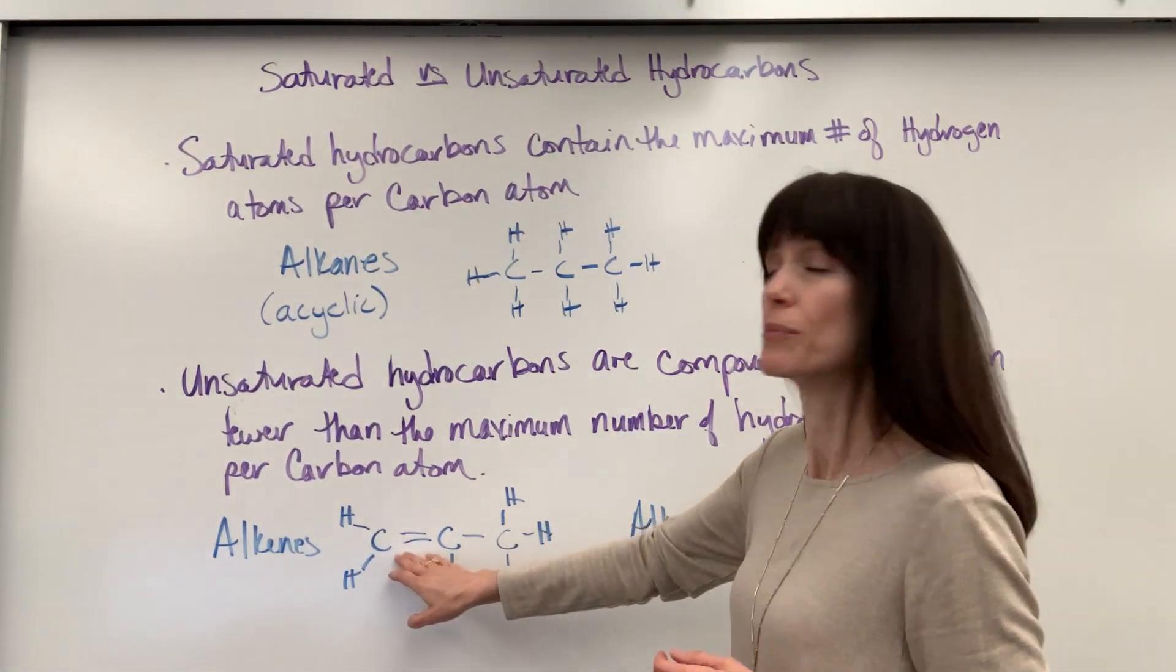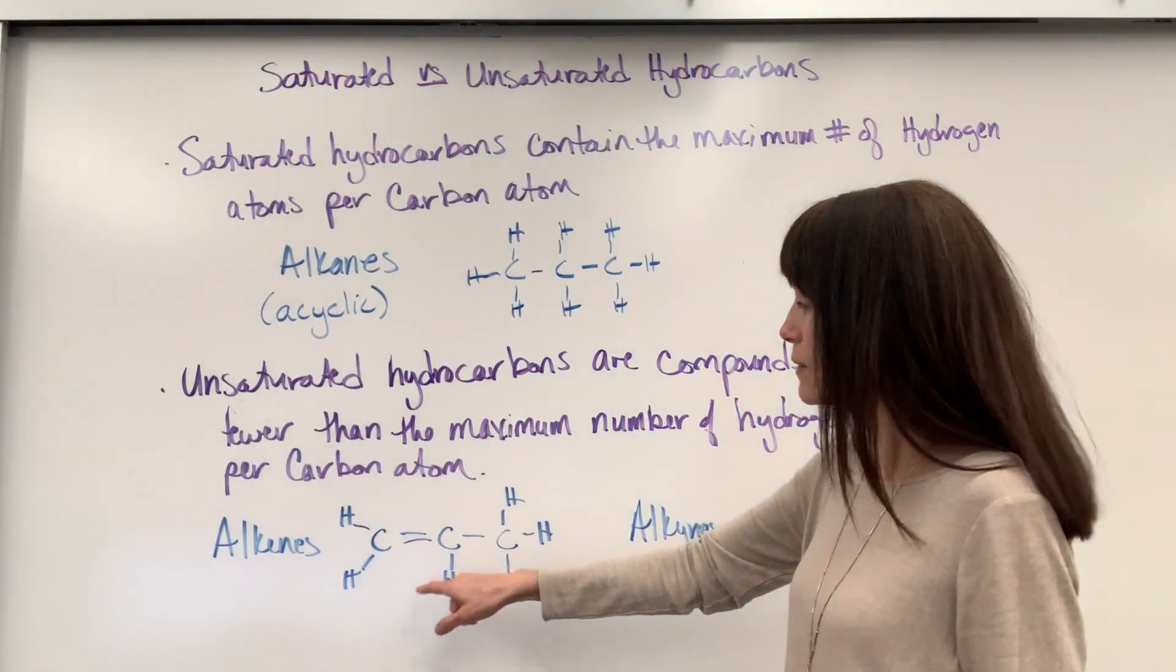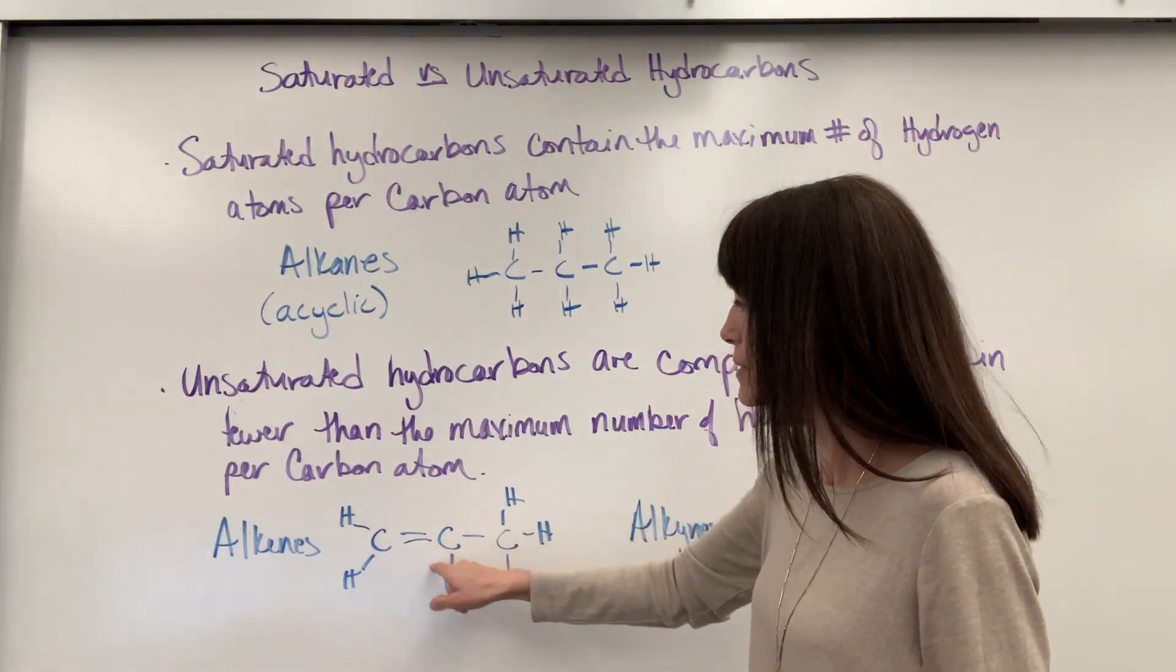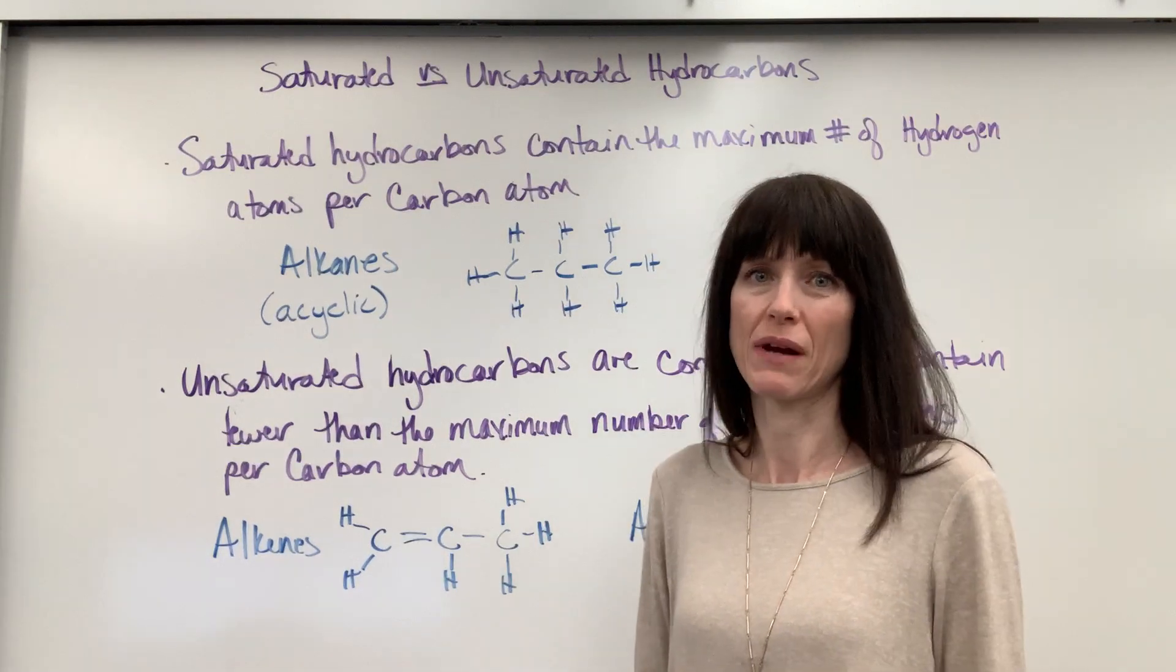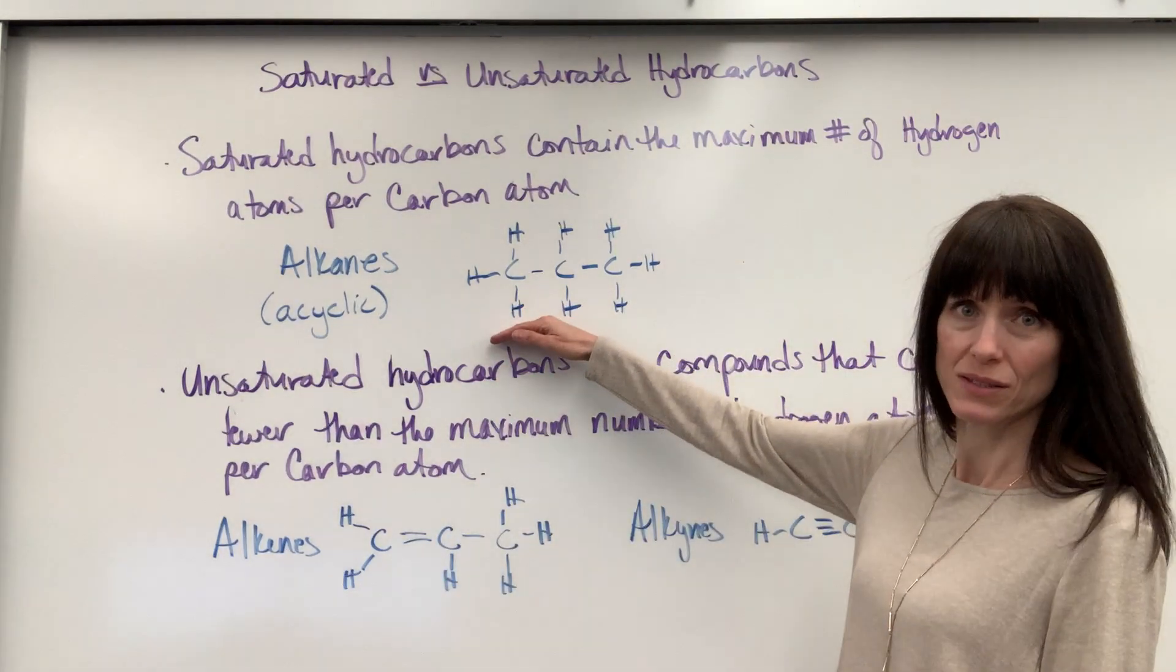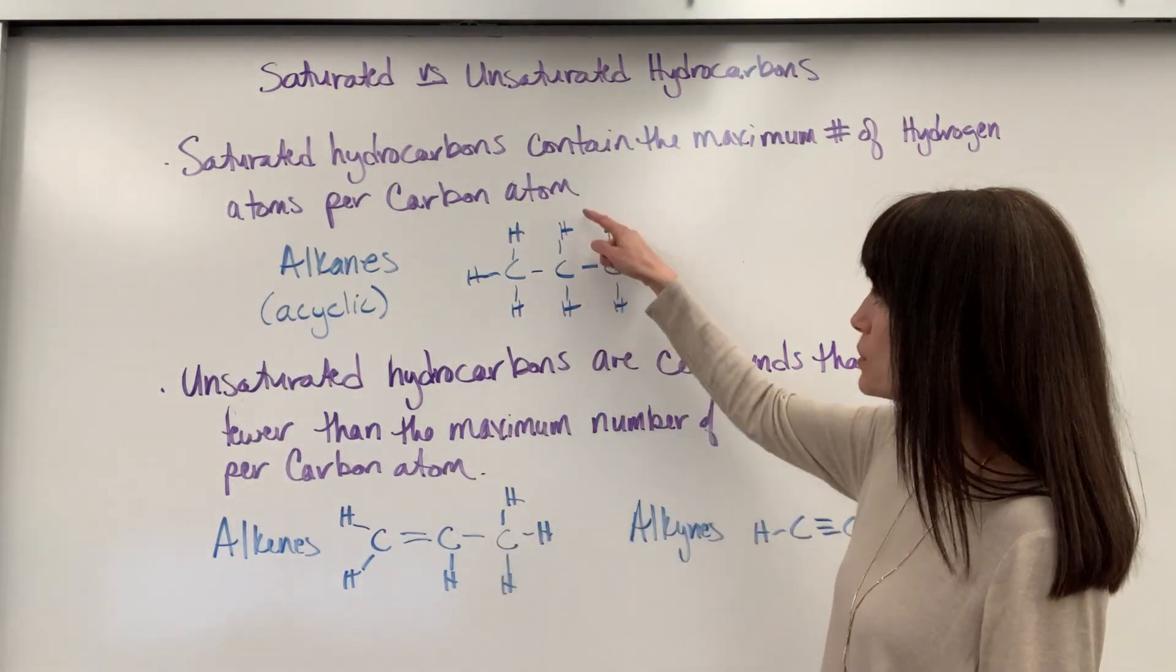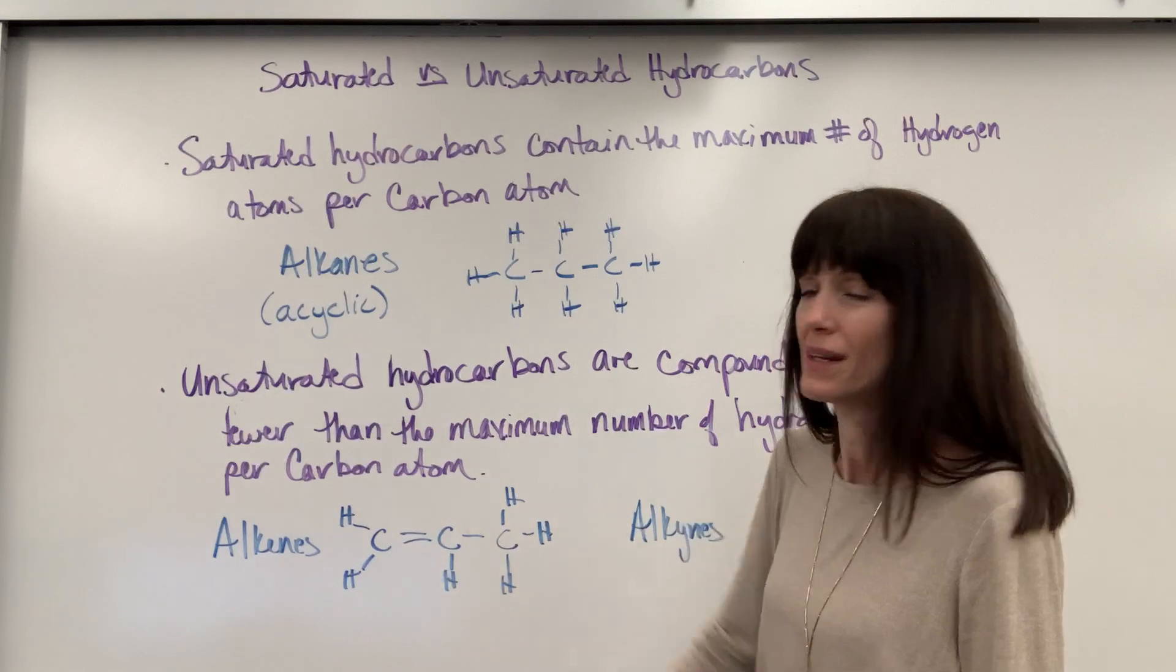So this would be a propene. I've got a double bond right there. And so those two carbons don't have the maximum hydrogens around them. If I remove this, it would look like this carbon up here with three hydrogens. That carbon would have two hydrogens. Instead, there's only one and there's two. That's unsaturated.